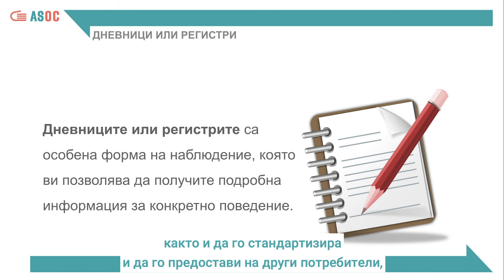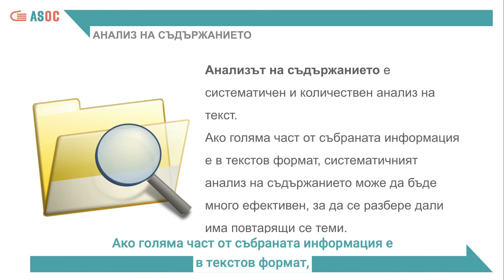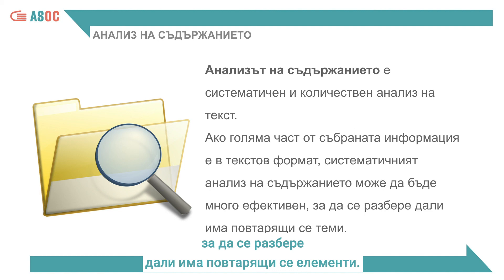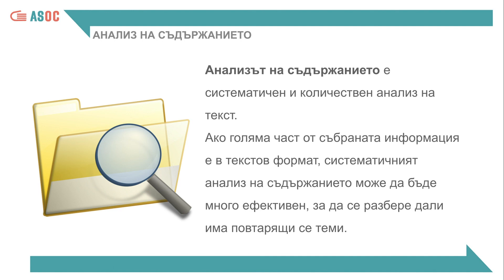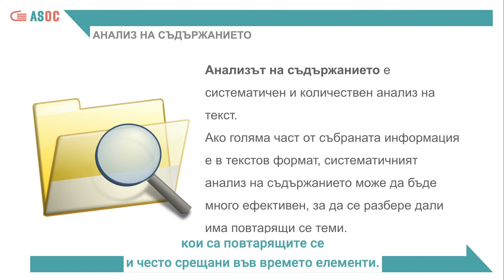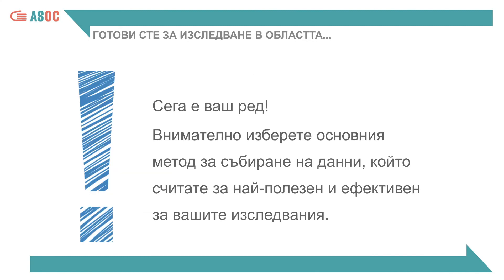It is also possible to standardize the record and provide it to other users so that they can document their experience. If a large part of the information collected is in written form, the systematic and quantitative analysis of the contents — that is, content analysis — can be very effective in understanding if there are recurring elements. For example, you can collect all the articles of an online newspaper on a specific subject and insert the entire text into online software to understand which elements are recurring and common, perhaps over time.